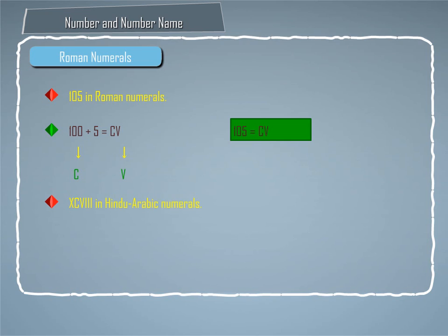Example 2: To write XCVIII in Hindu-Arabic numerals, we have XCVIII equals XC plus VIII equals 90 plus 8 equals 98. Here, XC is written as 90 and VIII as 8. So, 90 plus 8 equals 98.